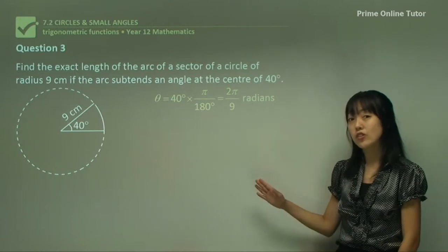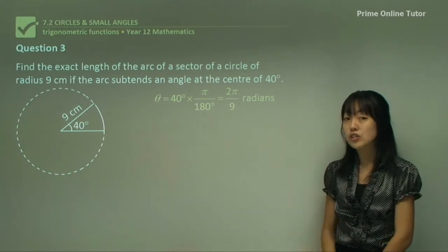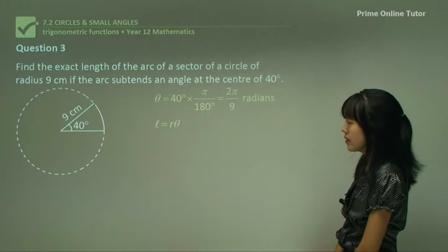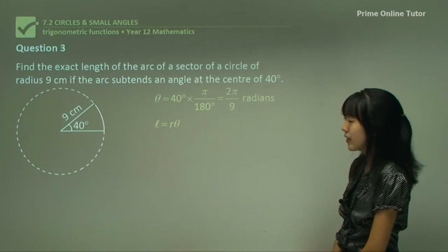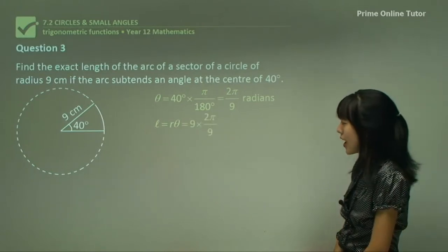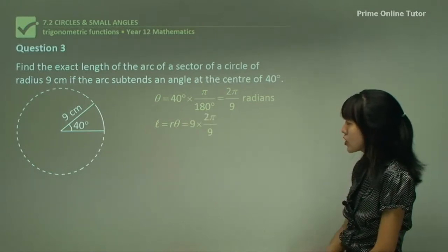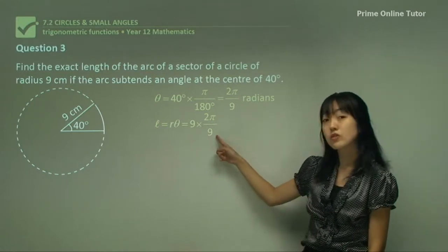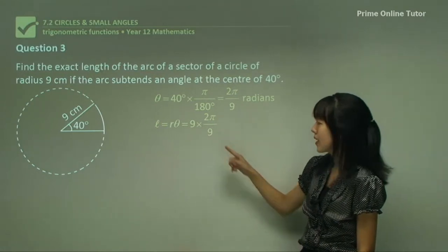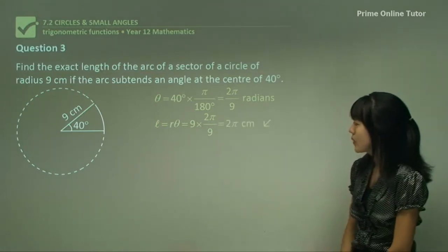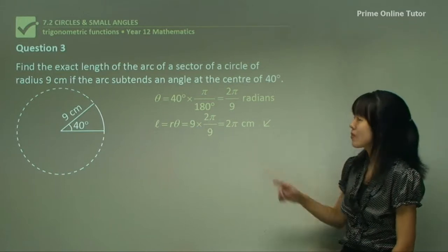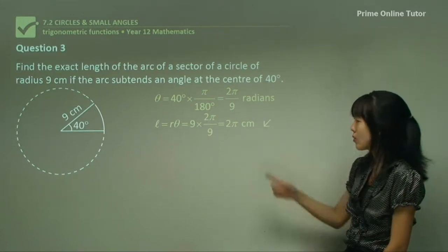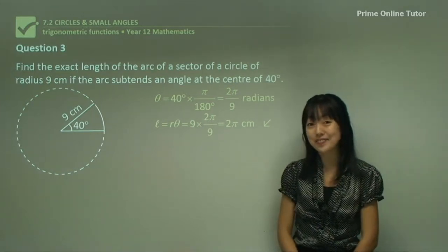Once we've done that, we substitute into L equals R theta. L is the length of arc — substitute radius 9 and the radian angle 2π/9 that we just found, and we get 2π centimetres. Because it's an exact value, we leave it in terms of pi.